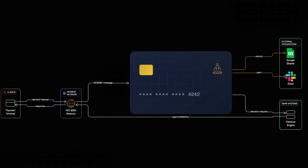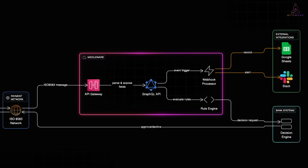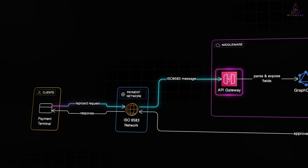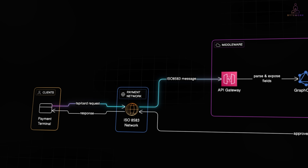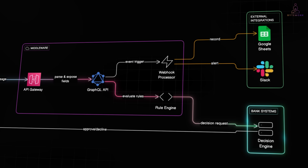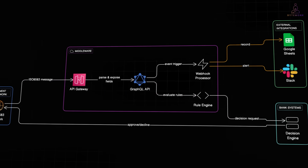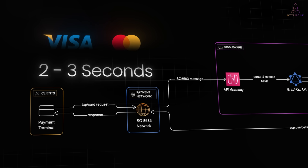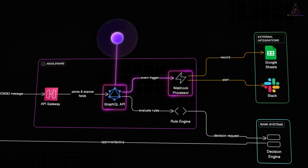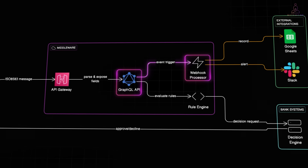So where do programmable cards fit in? They inject a middleware layer into this flow. When an authorization request comes in, instead of going straight to the bank's decision engine, it first hits an API gateway that runs your predefined rules against the transaction in real time. Think of it like a reverse proxy, but for money. The request comes in, your rules evaluate against the transaction metadata, and you return an approve or decline signal before the bank makes a decision. This is technically possible because of how payment networks handle timeouts — you typically have two to three seconds before Visa or Mastercard considers the request failed. And that's enough time to parse the ISO 8583 fields, run them through custom logic, hit a webhook, even call an external API if you need to.